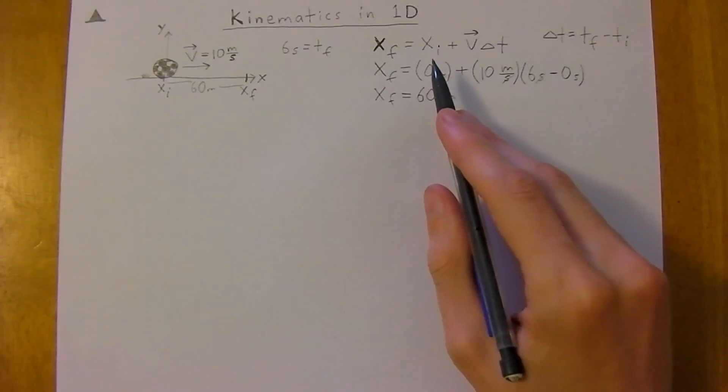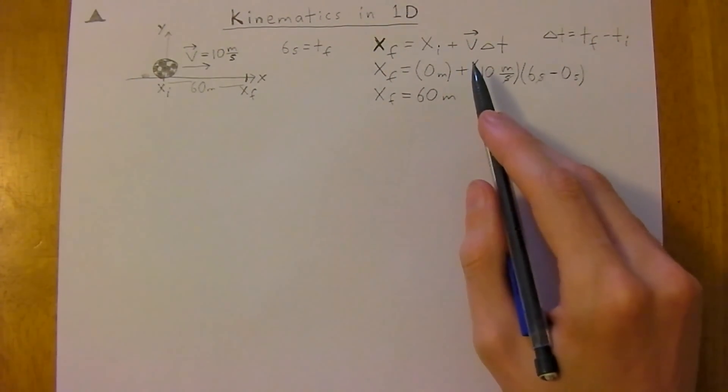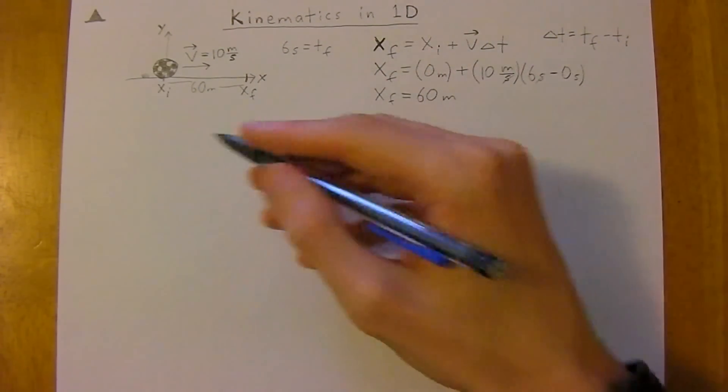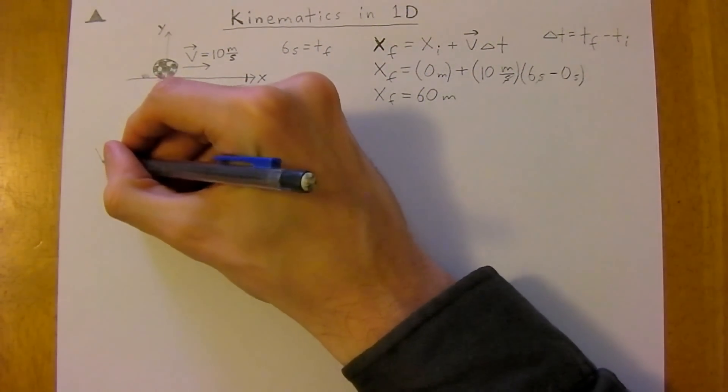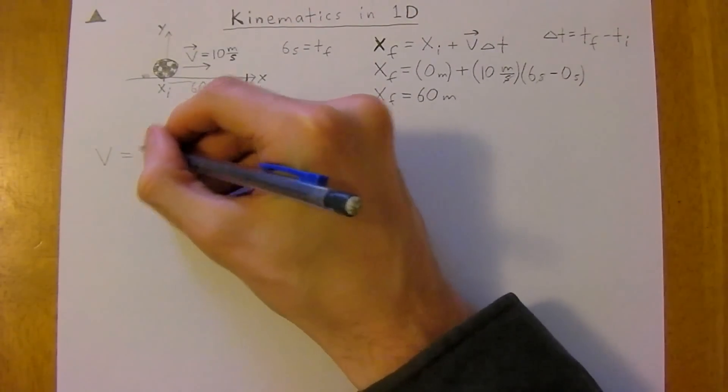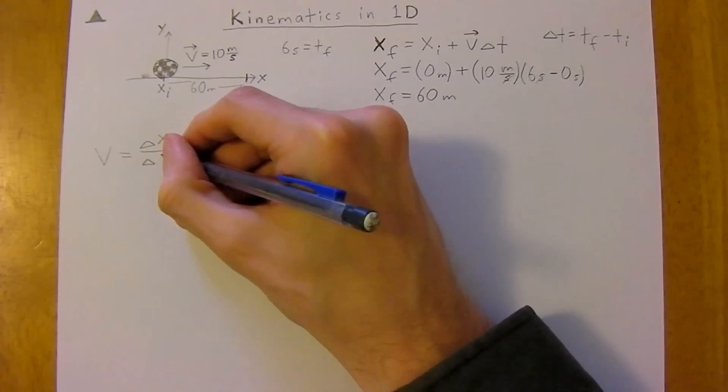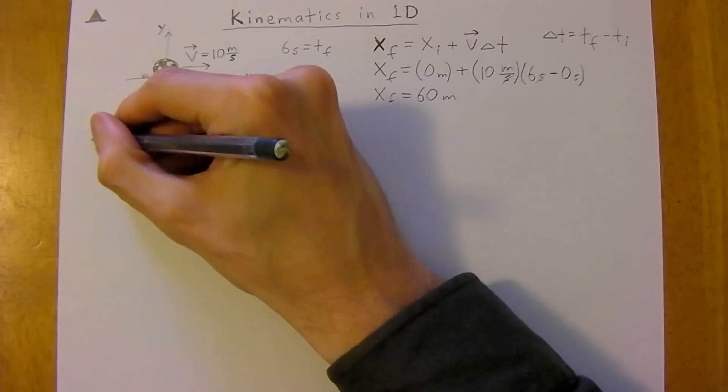Now, you can memorize this equation, but it's a lot easier. The way I prefer to do it is to just derive it each time. So where does that come from? Well, we know that your velocity is equal to your change in displacement divided by your change in time.